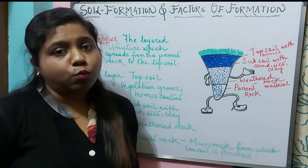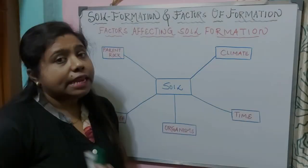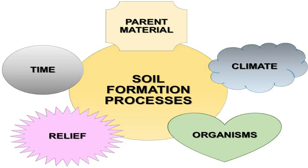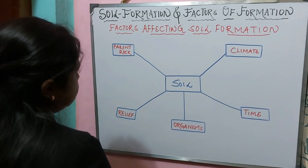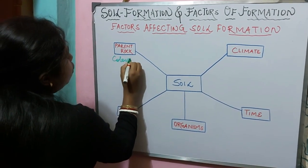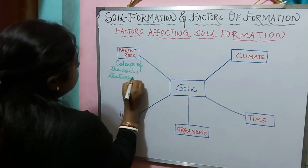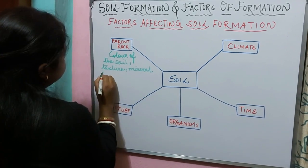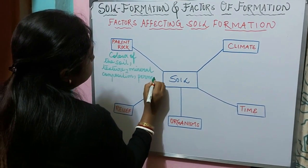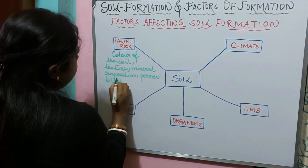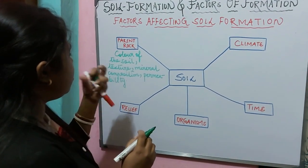Now let us understand the factors that affect the formation of soil. The first factor is the parent rock. On the basis of the parent rock, it determines the color of the soil, its texture, mineral composition, permeability, and water retention capacity — all will depend on the parent rock.